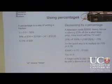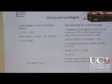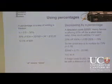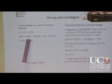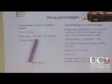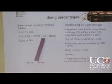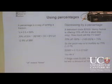A percentage is a way of writing down a fraction, so 50% is 50 out of 100, which is a half. And so 30% of $34 is 30 over 100 times 34, which is $10.20.